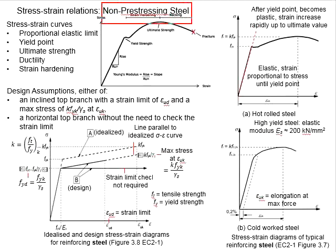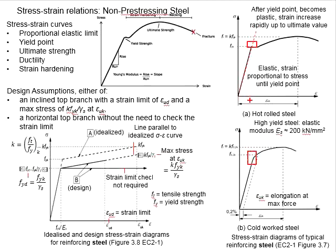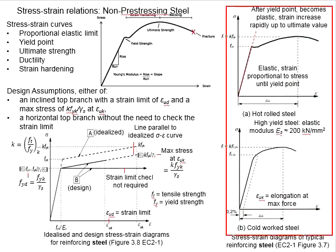It is noted that for non-prestressing steel, there are two types: hot-rolled steel and cold-work steel. Hot-rolled steel normally has a sharp turning point to represent the U-strength. However, for cold-work steel, the U-point is not as obvious — the turning point is not as sharp. With that, the U-point for cold-work steel is determined by offsetting the gradient of the elastic stage by 0.2% strain. The intersection between this offset line and the curve represents the U-point.